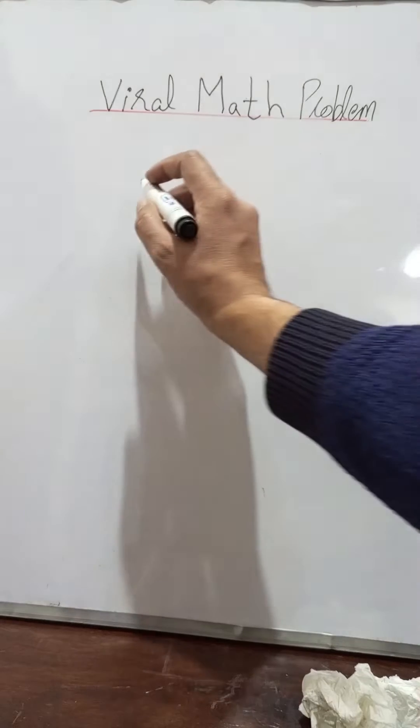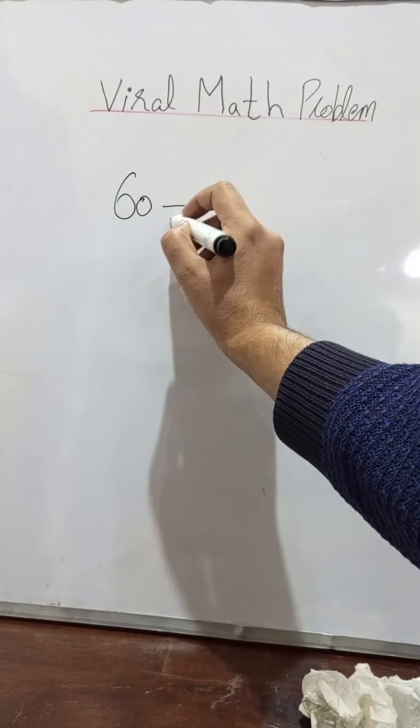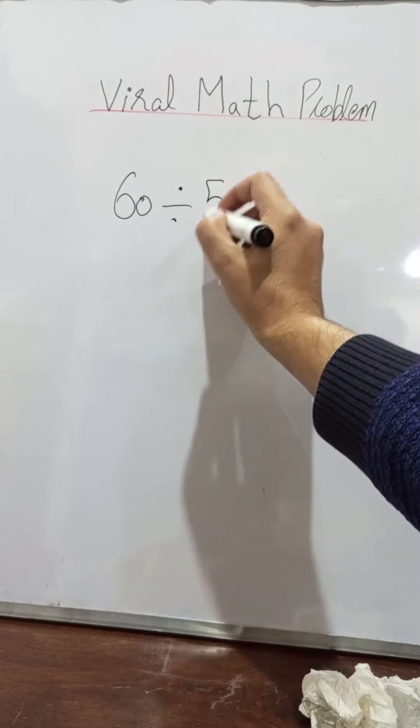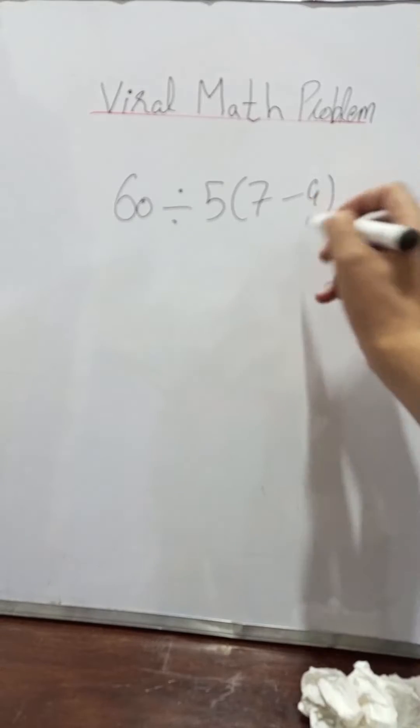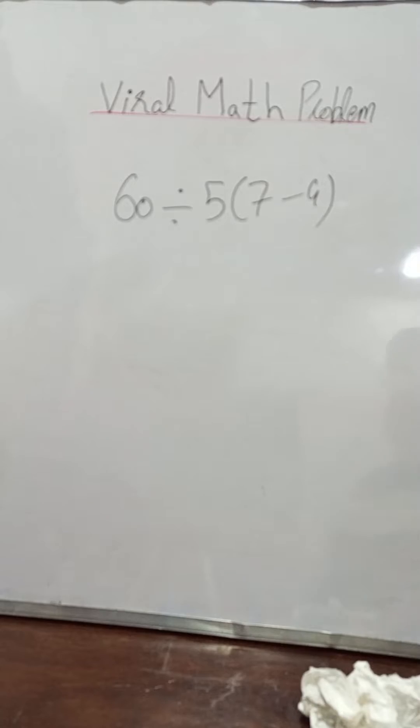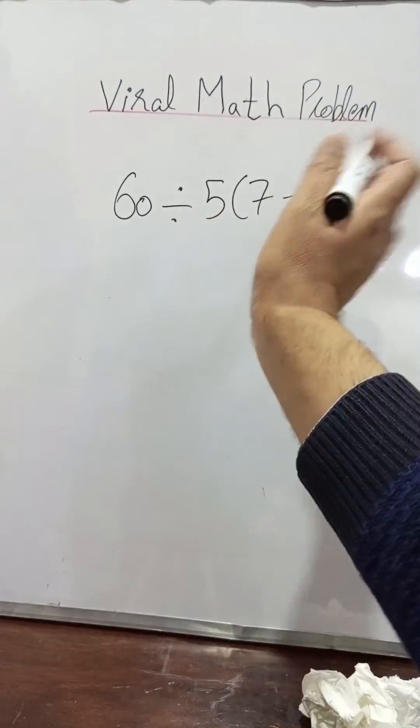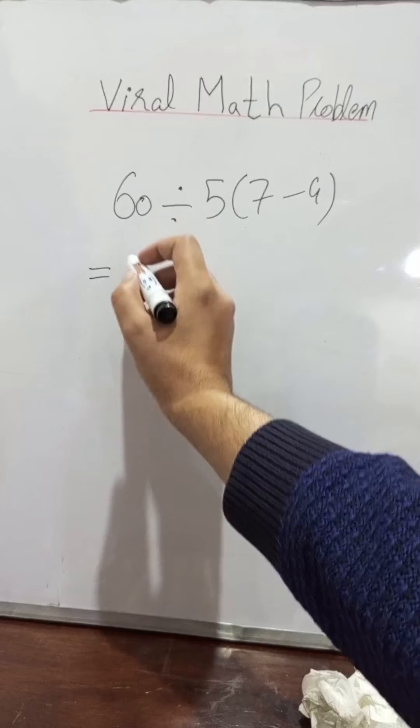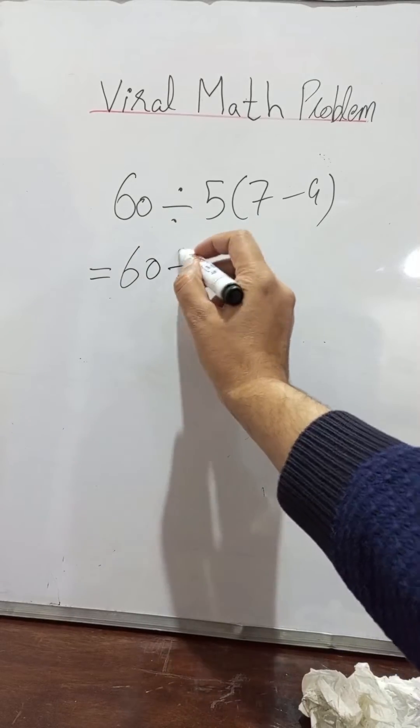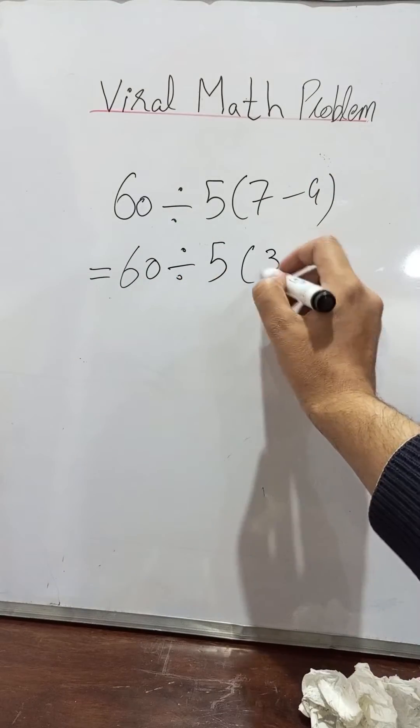Assalamu alaikum, welcome to Viral Math Problem video. Today I'm going to discuss this question related to BODMAS. First of all, I have to solve these two terms in the bracket, so 7 minus 4, we get...